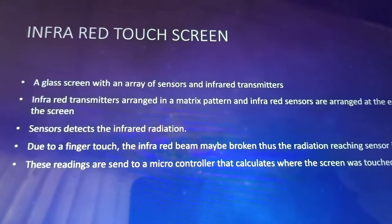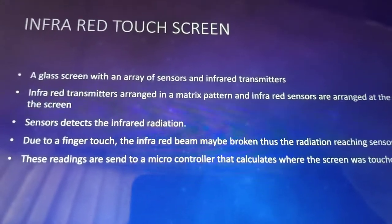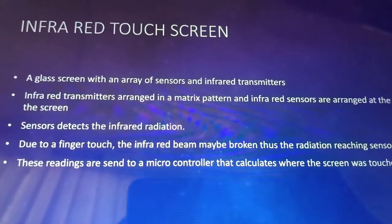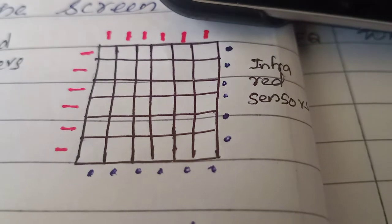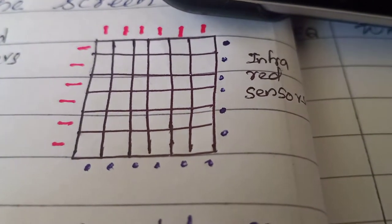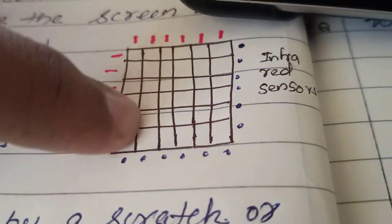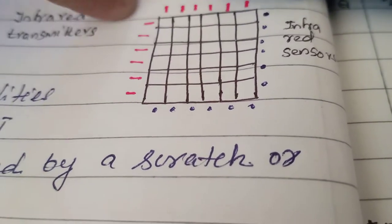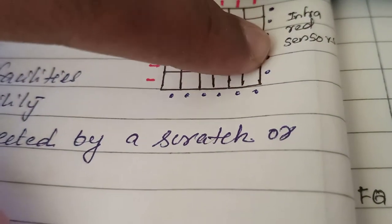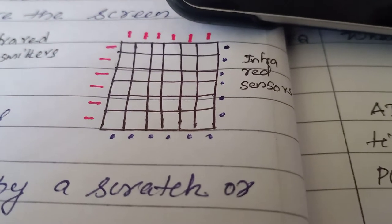An infrared touch screen consists of an array of sensors and infrared transmitters. This is how an infrared touch screen looks like. These black lines show you the infrared grid lines. These red markings are the infrared transmitters, and these blue dots here are your infrared sensors. The transmitters will send the infrared beams and the infrared sensors will sense them.